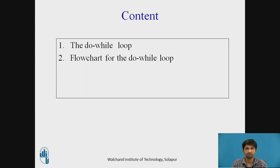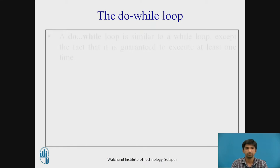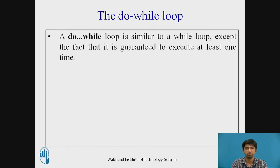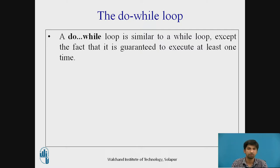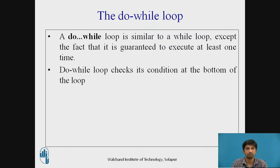The following contents will be discussed in this video lecture: the do-while loop and its flowchart. The do-while loop is similar to a while loop except that it is guaranteed to execute at least one time. The body of the loop or the statements will be executed once, and afterwards the condition is checked. The do-while loop checks its condition at the bottom of the loop.